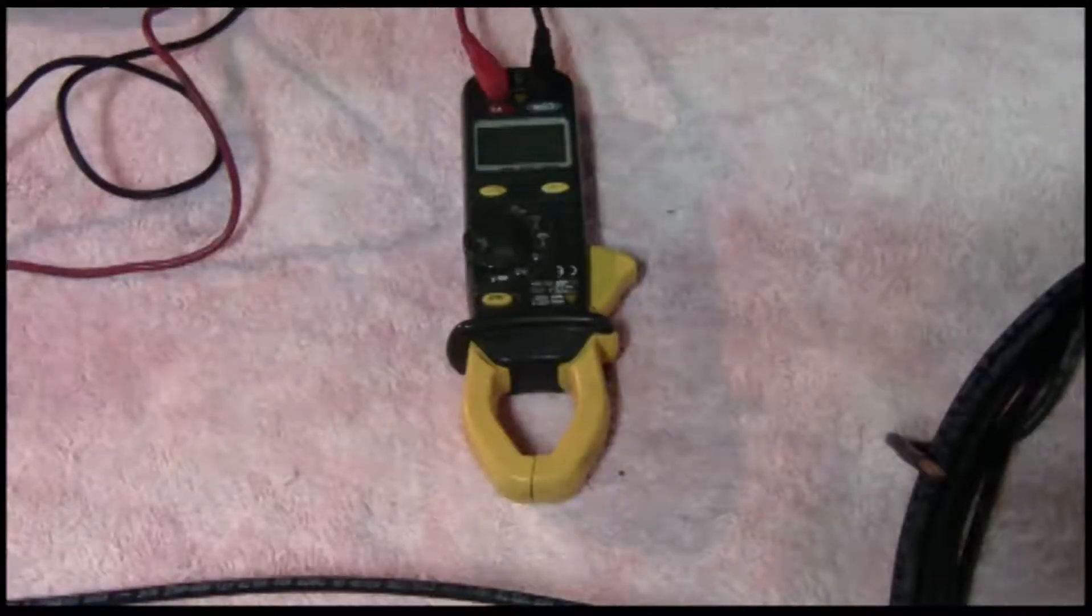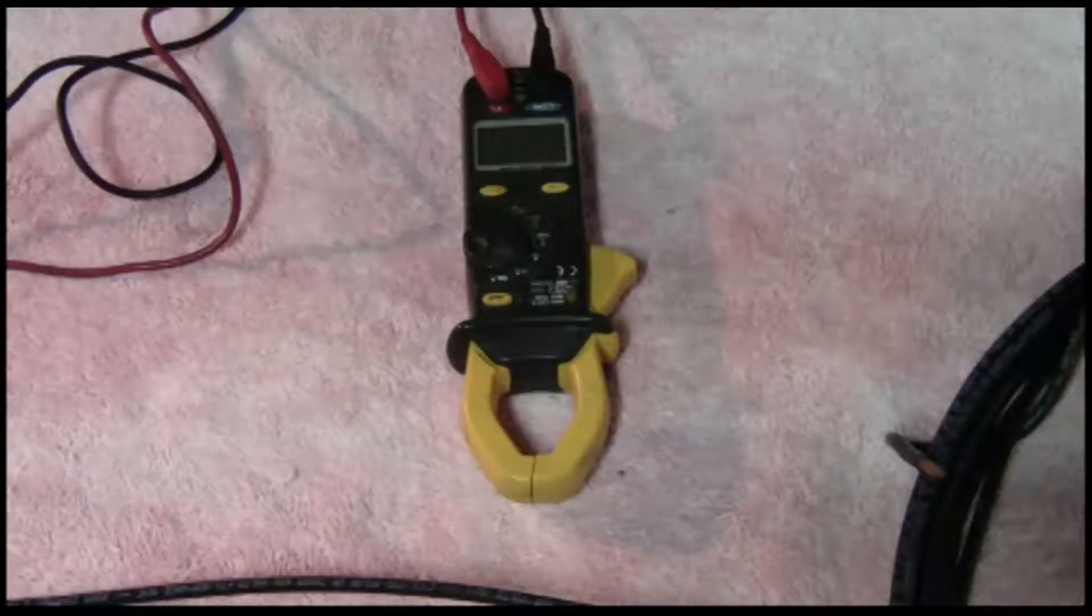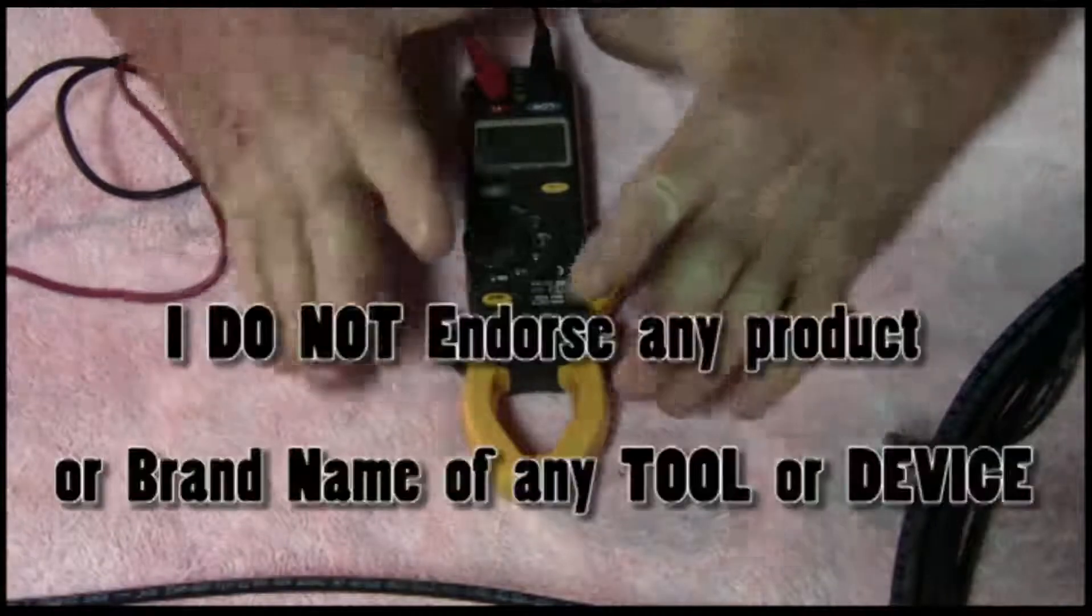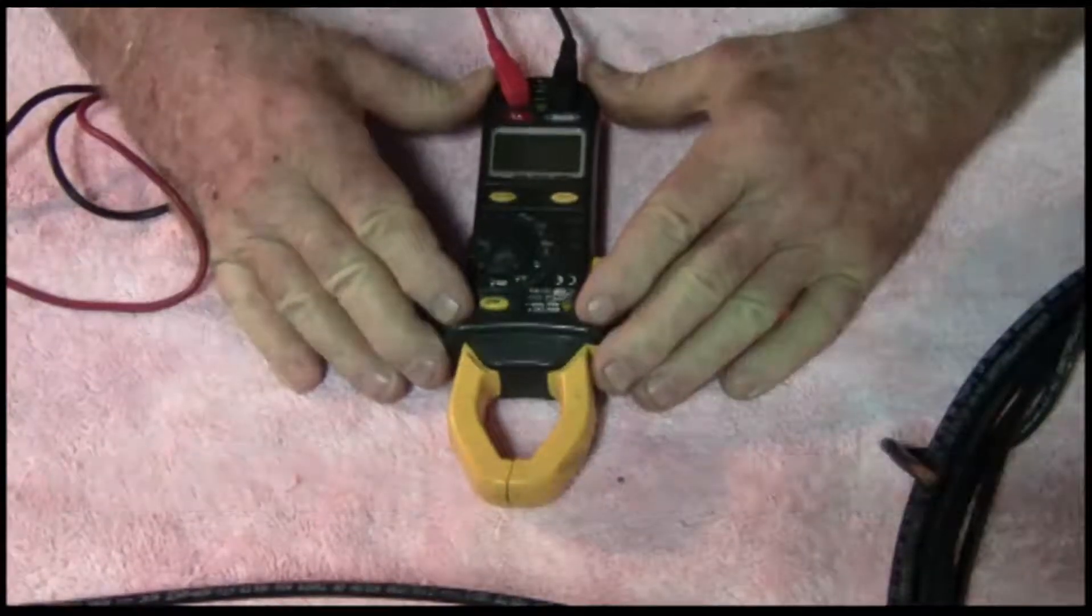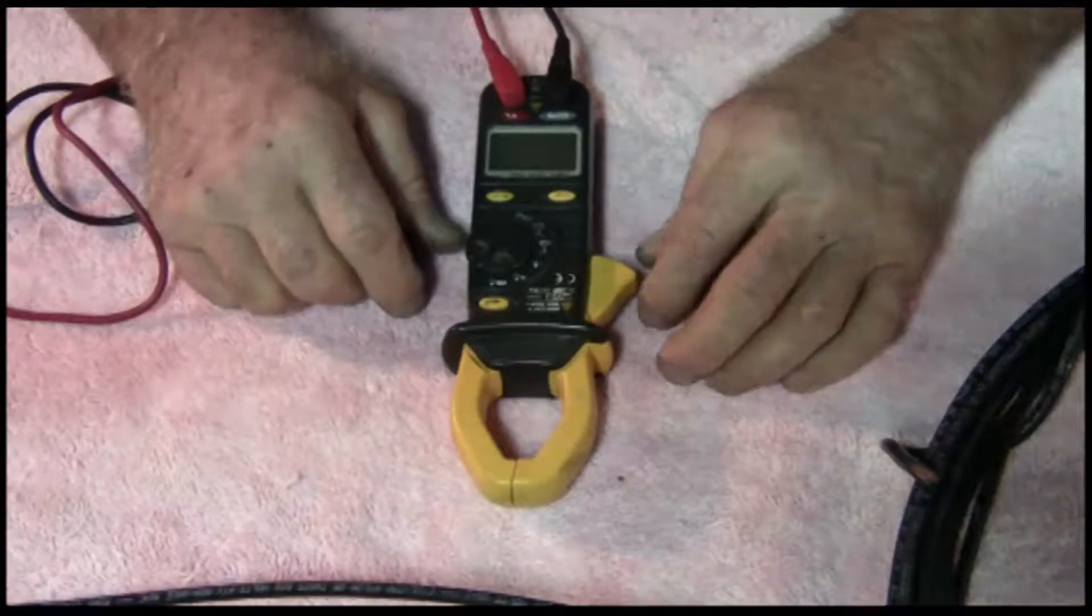By far one of the most important tools I use is called an amp probe. Now this acts as a multimeter but doesn't have as many settings. It measures the amount of amperage going through a wire.